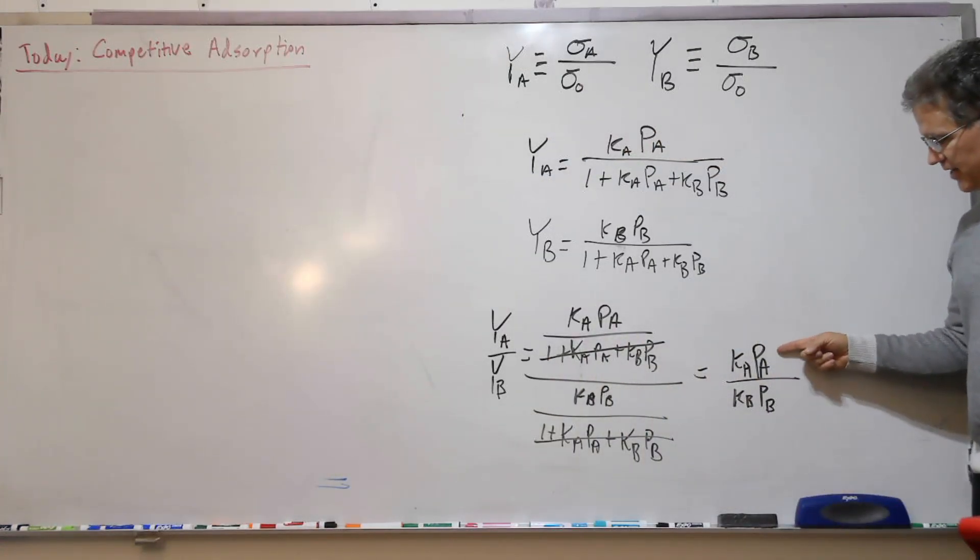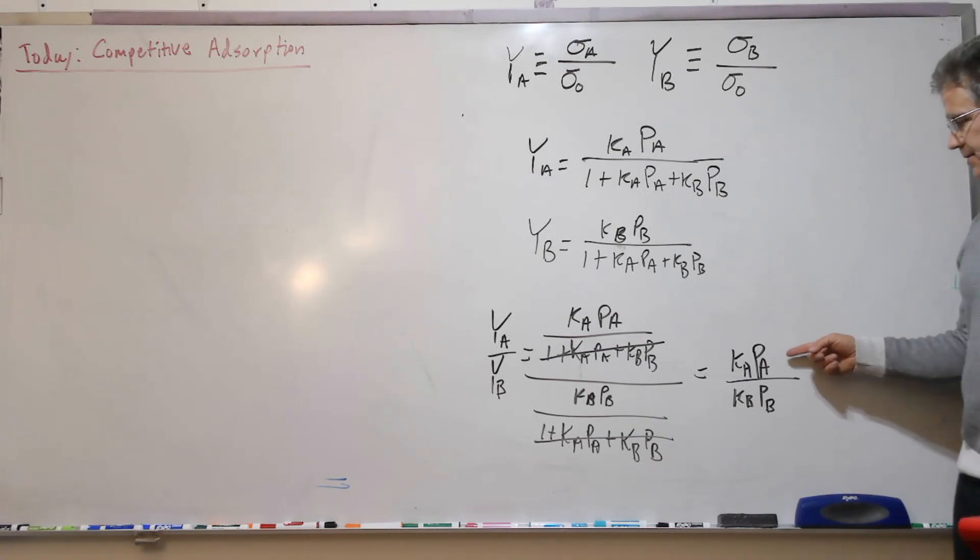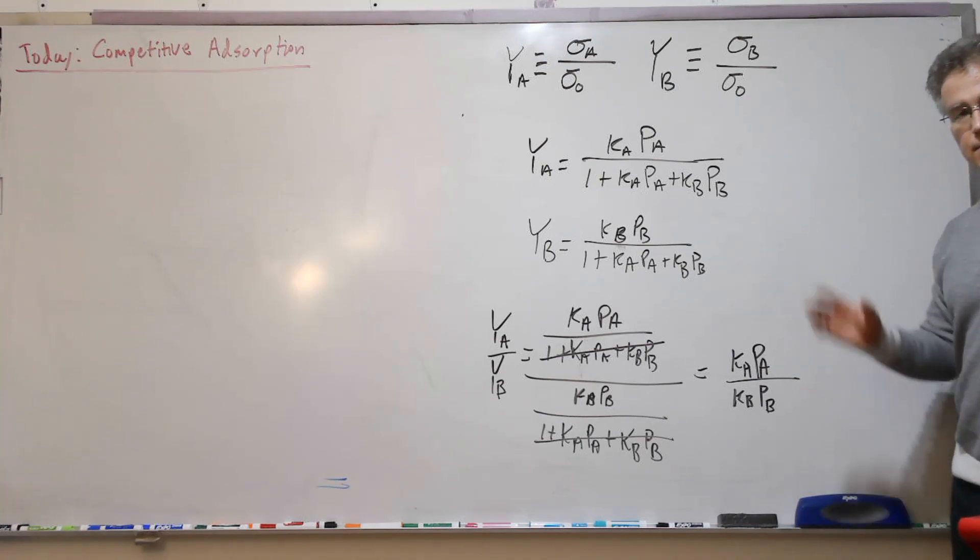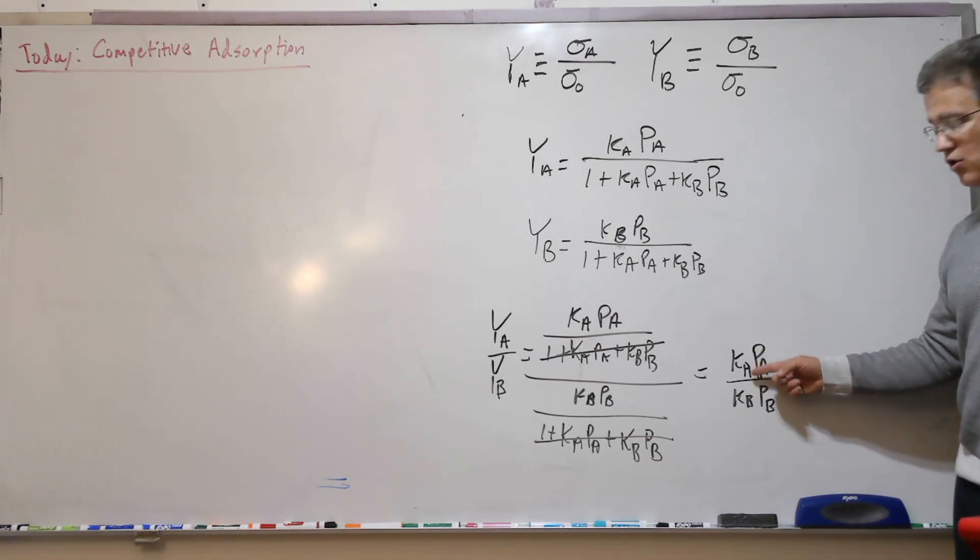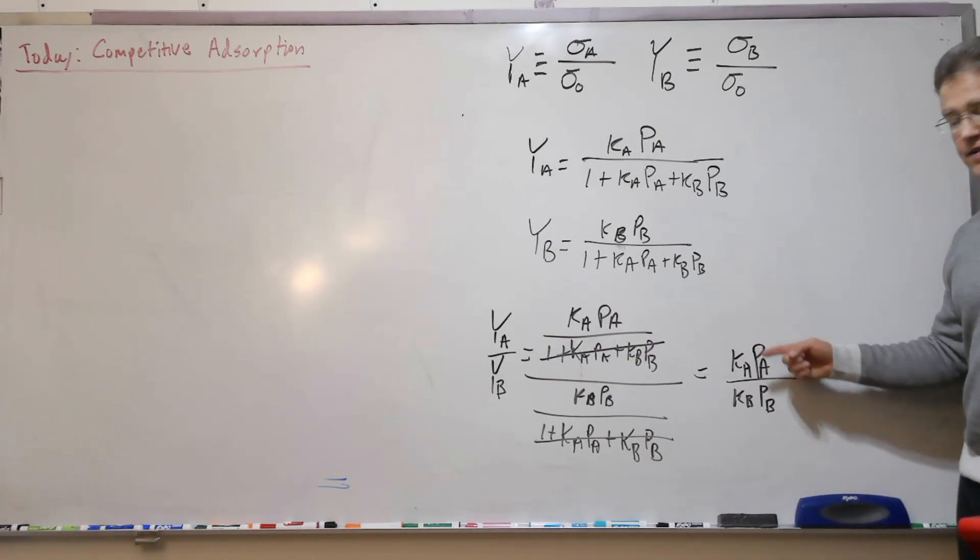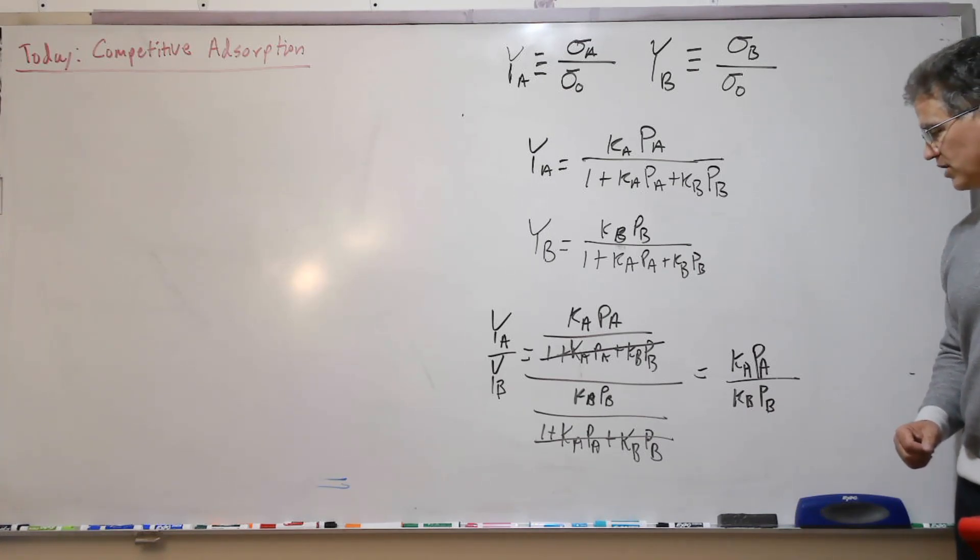And so we kind of see the two things that matter here: the partial pressure of A and the partial pressure of B. Of course, if A's partial pressure is bigger, then we're more likely to have A absorb. If B partial pressure is bigger because there's more B around, we might more likely have B. So we have this ratio, and then we have the propensity to absorb, K_A versus K_B in this factor. And again, if it's purely statistical, then these both become K, and we just have the ratios of the partial pressures.